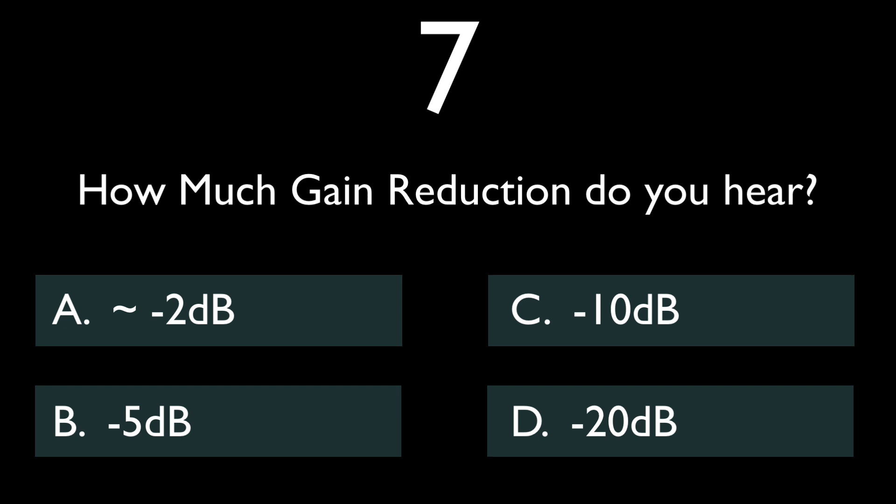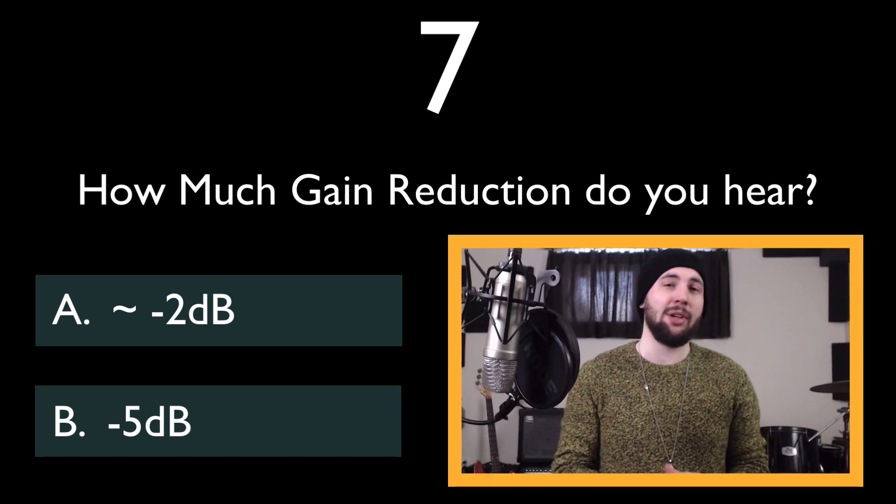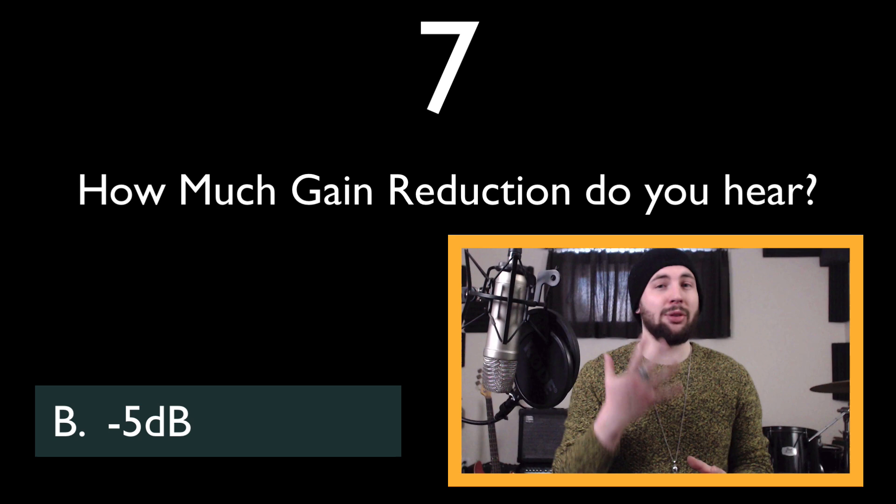Not enough compression to even out this performance. As we discussed in the last bass example, this riff decays and it gets quieter and in this example we don't have enough gain reduction happening to compensate for that drop in volume. We fixed that last time with 20 dB of gain reduction, but in this example there's only 5.